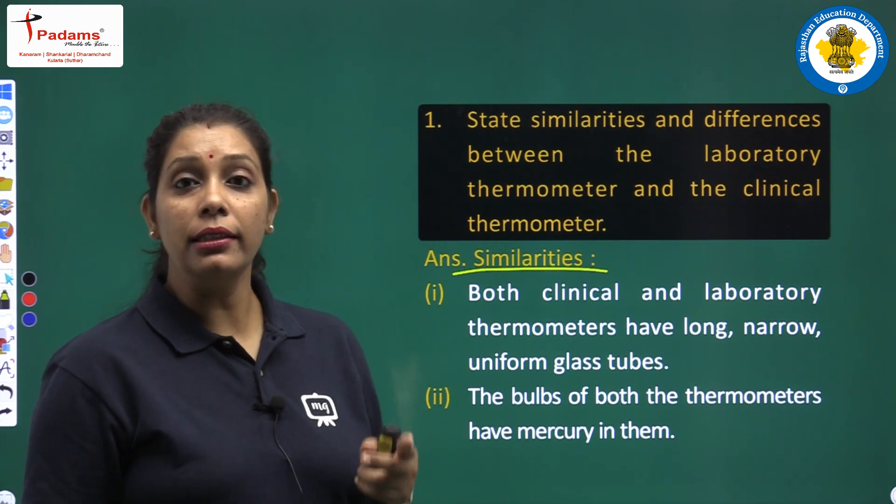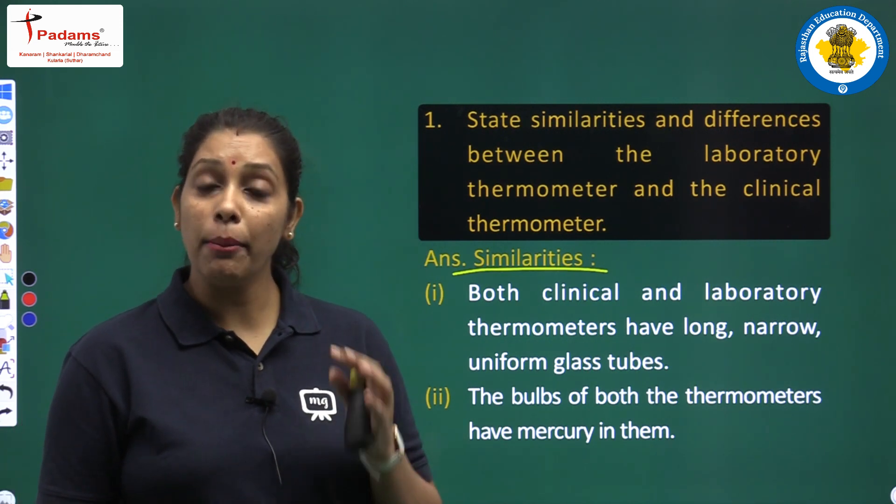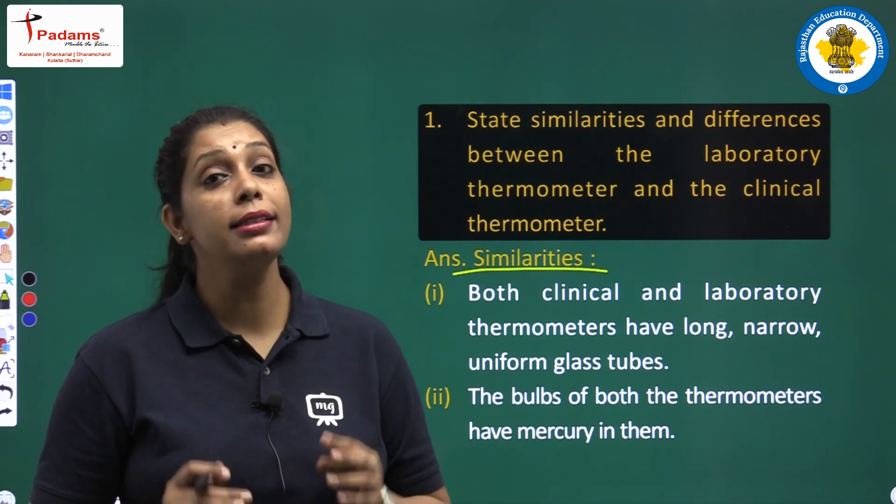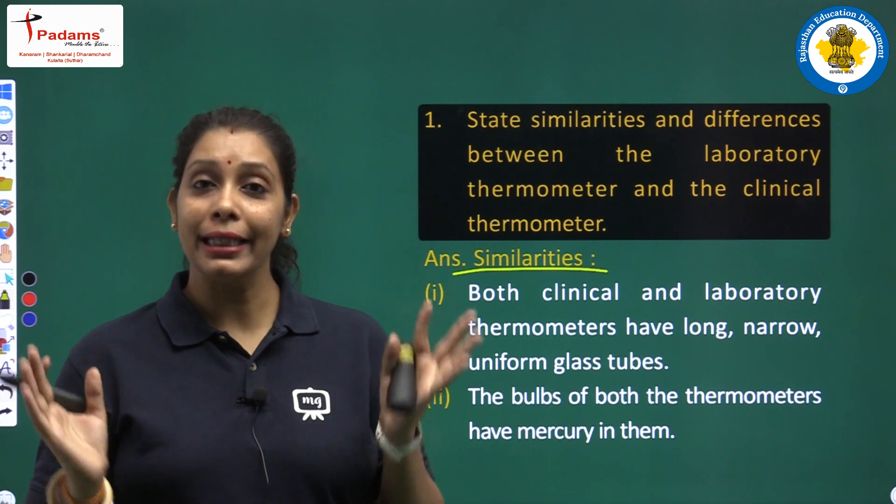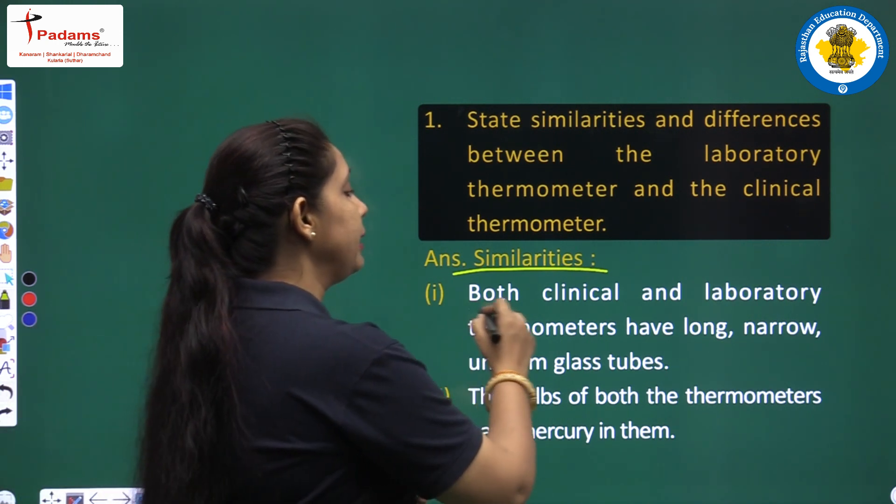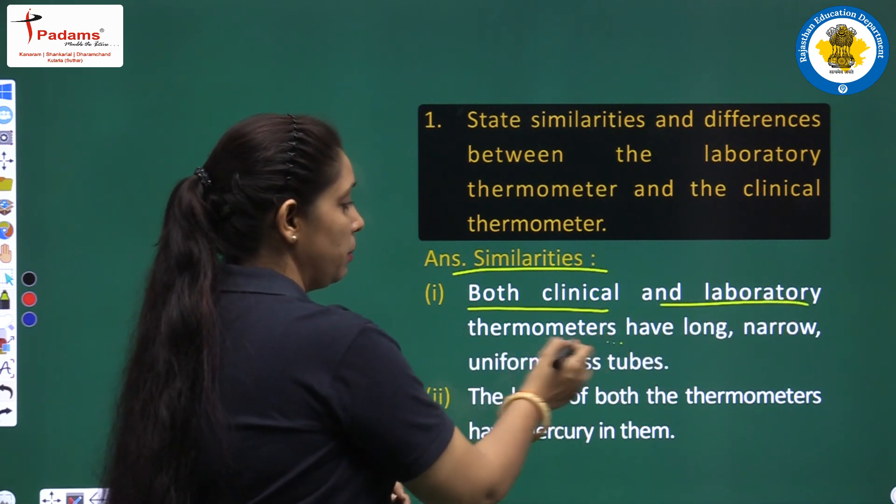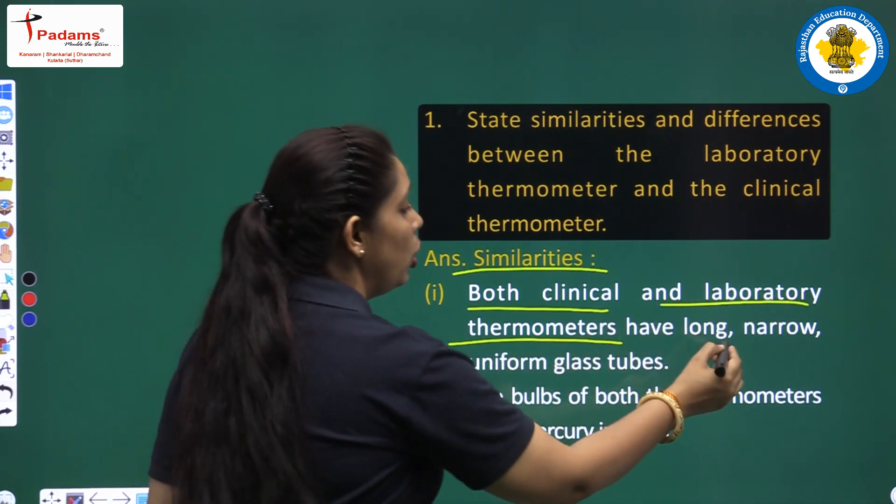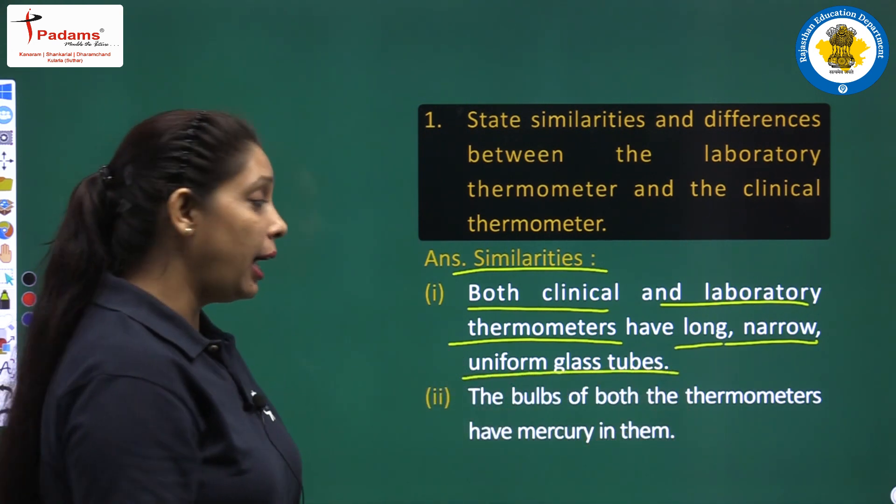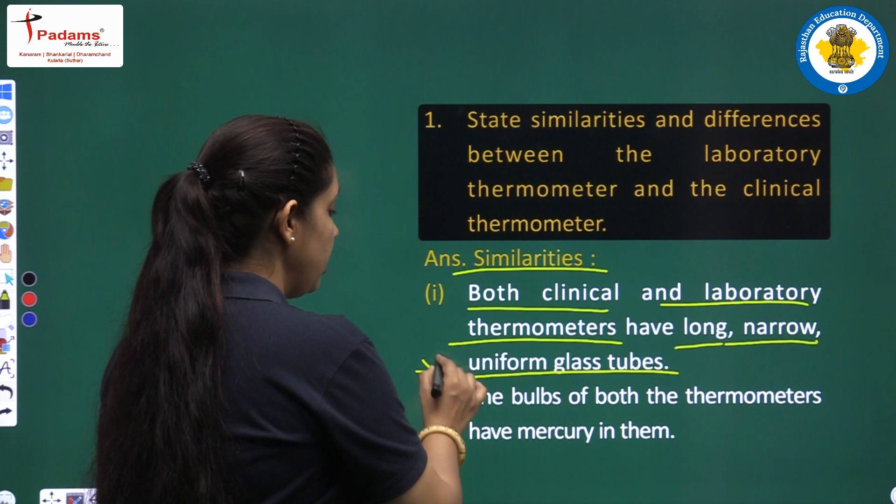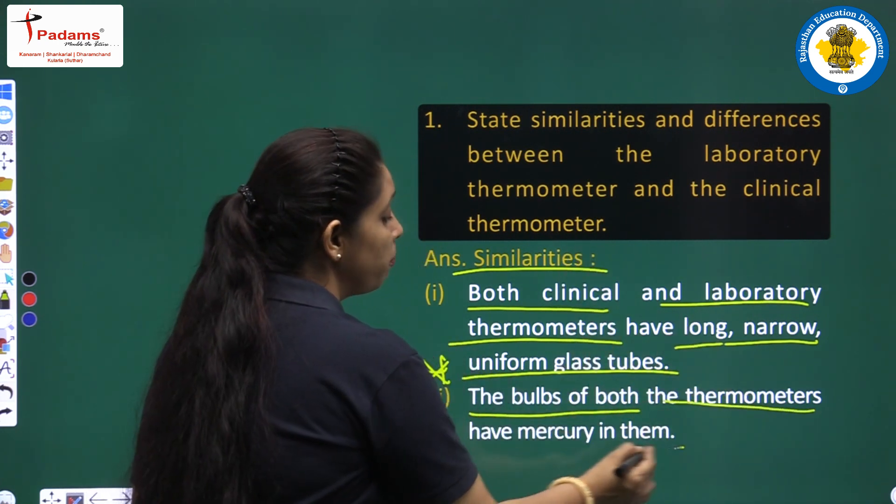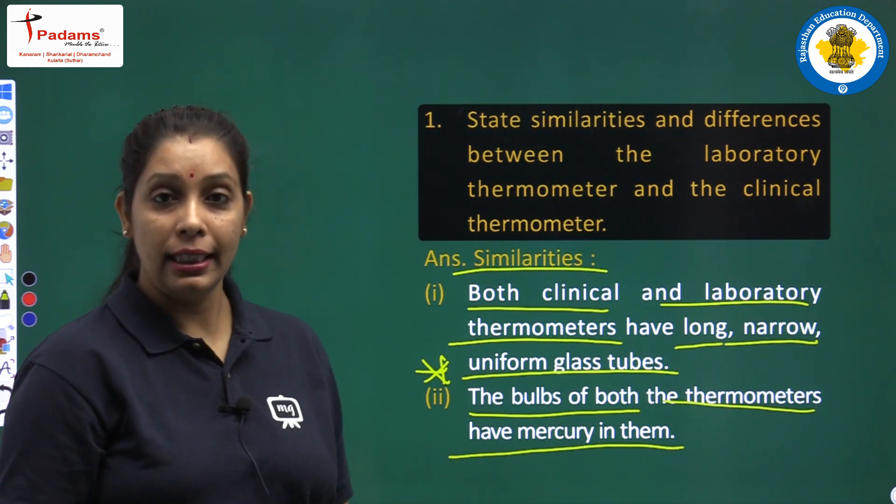First, what are the similarities? Both the clinical thermometer and laboratory thermometer have the same thermometric fluid, that is mercury. Both are made of glass. We have to write both clinical and laboratory thermometers have long, narrow, uniform glass tubes. And second important point, the bulb of both the thermometers have mercury in them.